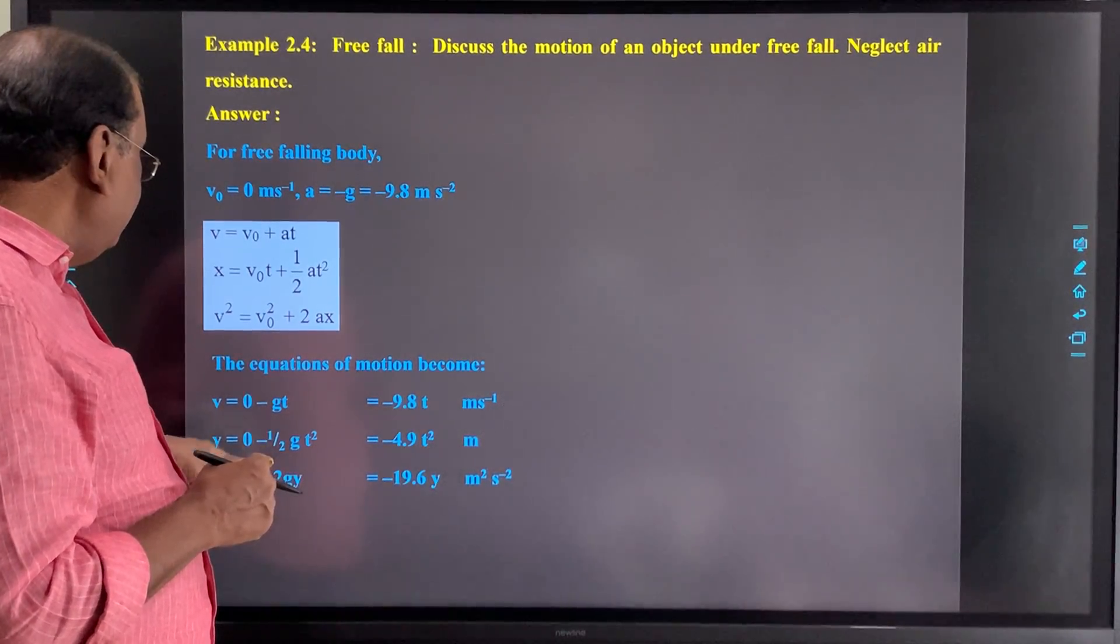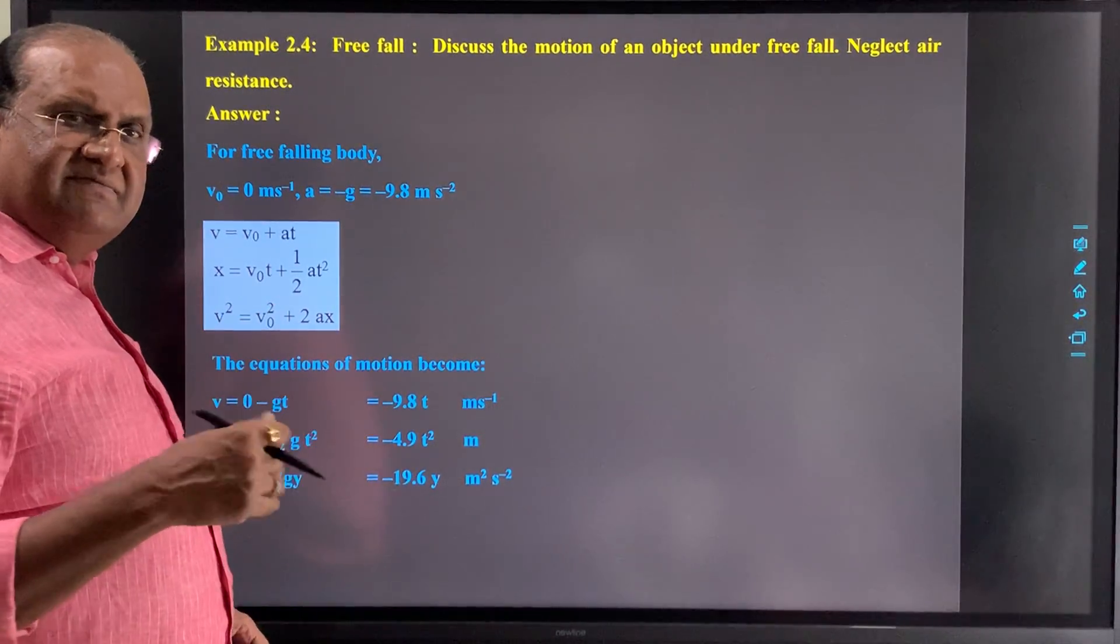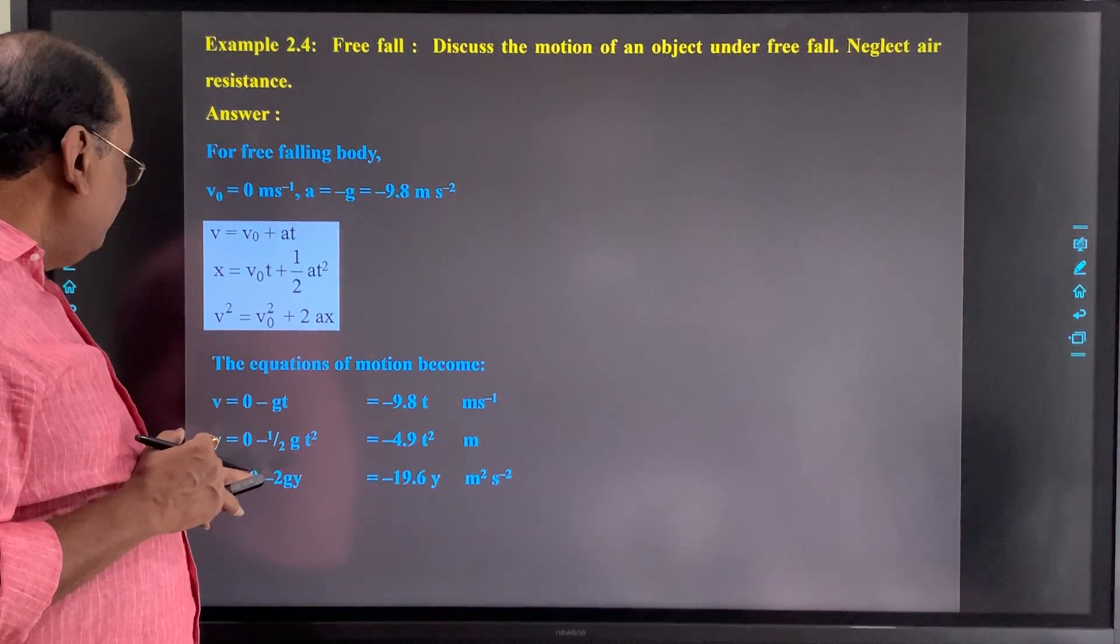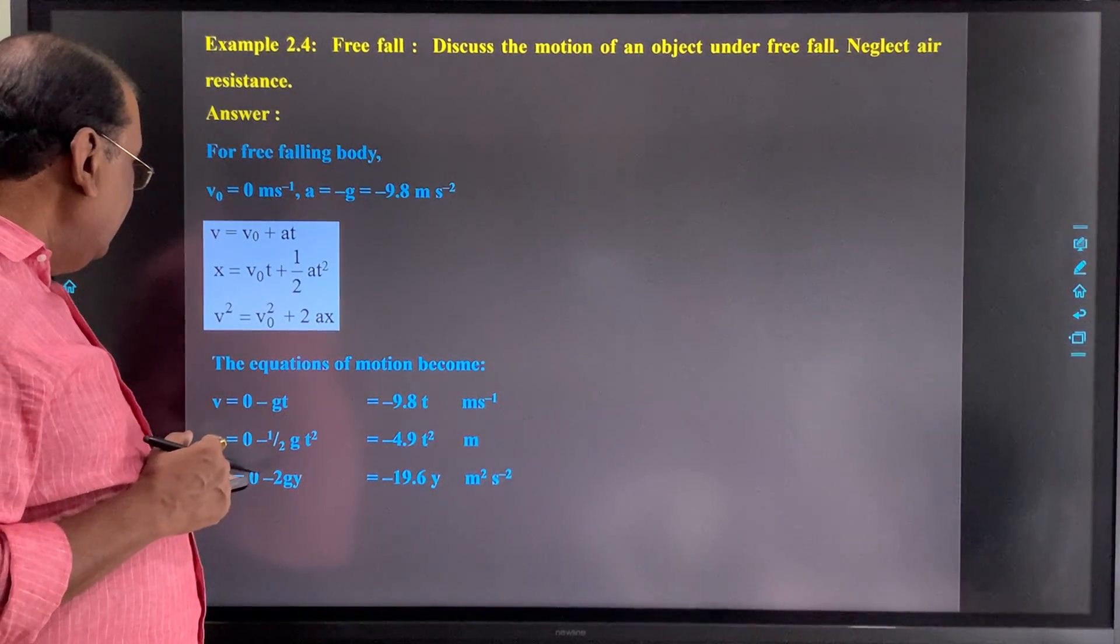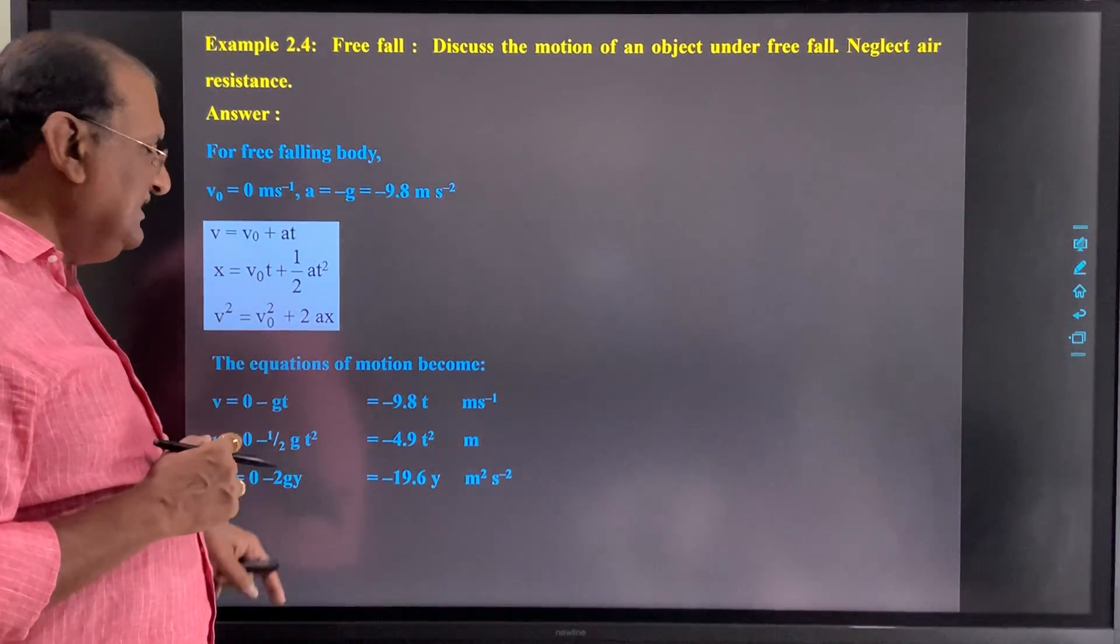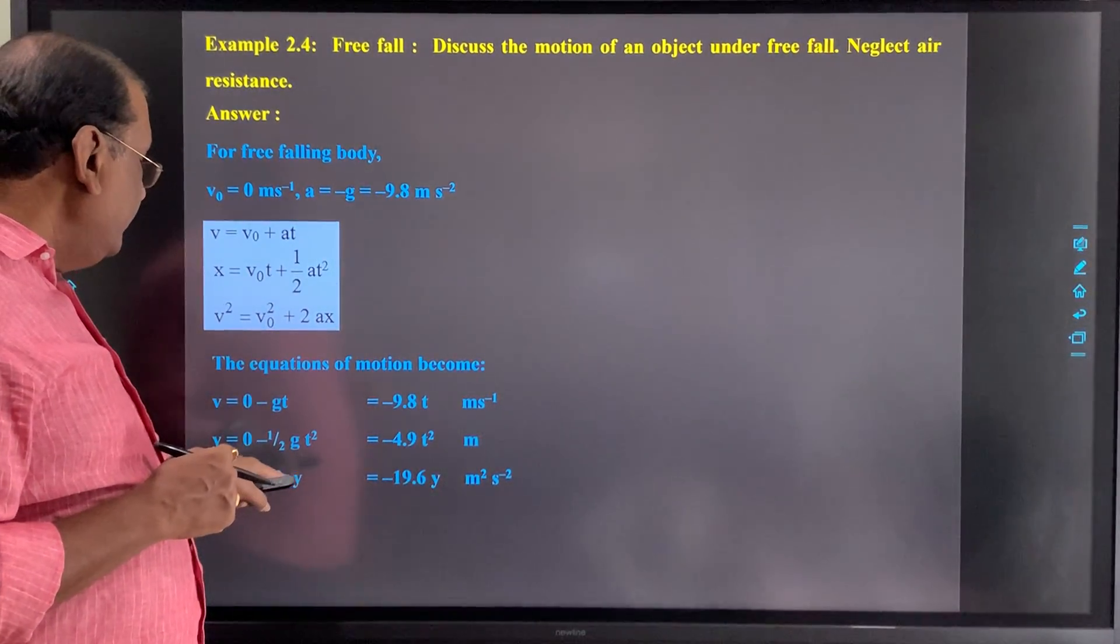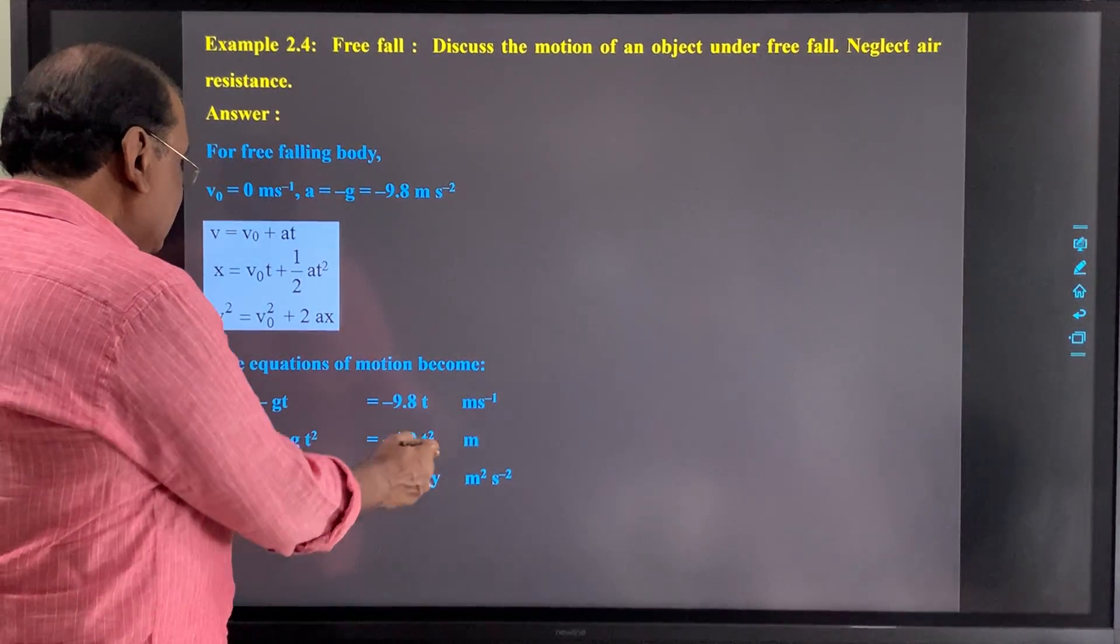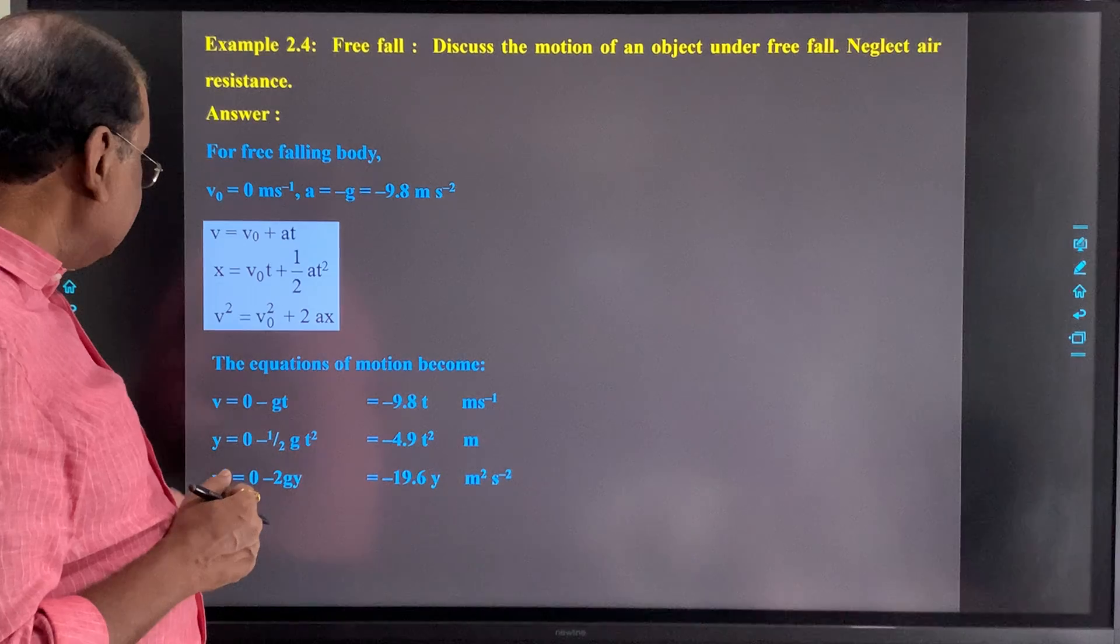Now third equation: v square equal to v₀ square plus 2ax. x will be replaced by y, so v square equal to 0 minus 2gy. So we can write v square equal to minus 2g, that is 9.8, so 2 into 9.8, that is 19.6y, meter square per second square.